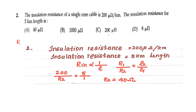So what are the values given? We are going to find out the insulation resistance for 5 kilometer length. The formula is R proportional to 1/L. We write R1/R2 = L2/L1. Now substitute the values and we get the answer R2 equal to 40 ohm.